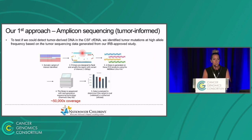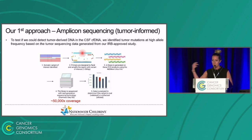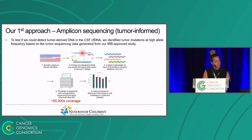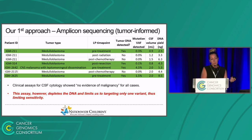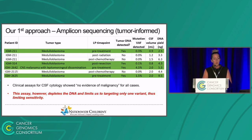Our first approach was to determine if we could even detect tumor DNA in these CSF samples using NGS technology. This is a tumor-informed approach, using previous exome data from patients in other ongoing studies at our hospital. We chose high-frequency variants and performed amplicon sequencing: we isolated cell-free DNA from the CSF, targeted particular variants, and sequenced at really high depth—about 50,000X coverage. In our pilot study, we performed this targeted amplicon sequencing on seven CSF samples from five unique patients, and we detected tumor-derived DNA in four of them. Notably, all clinical assays for CSF cytology reported no evidence of malignancy for all of these cases, which, based on our preliminary results, might not be true.